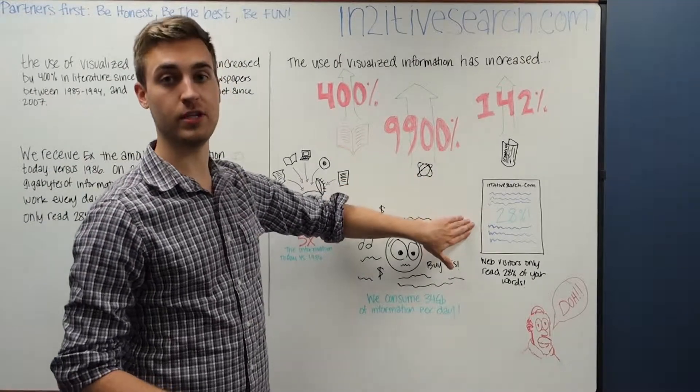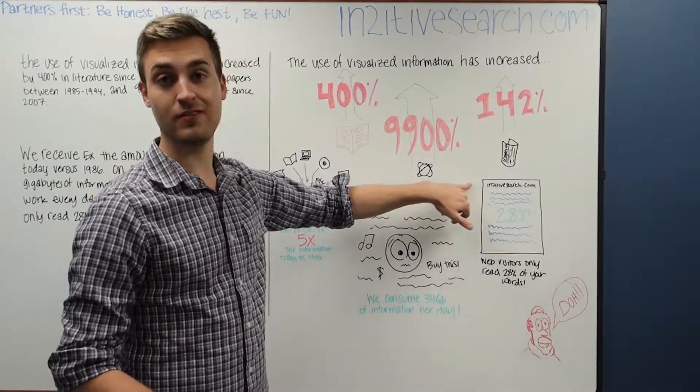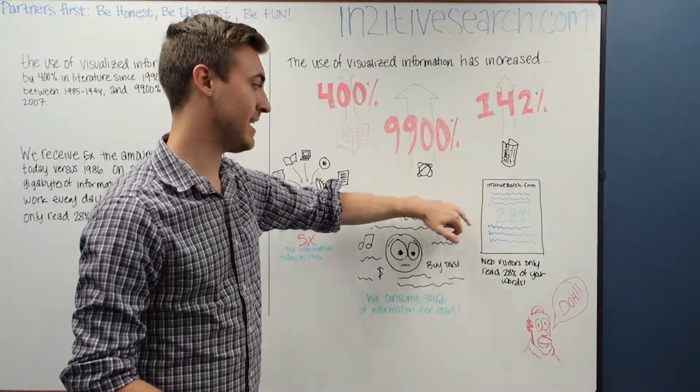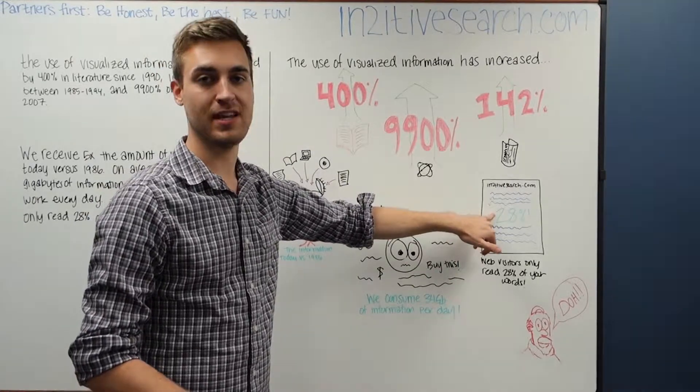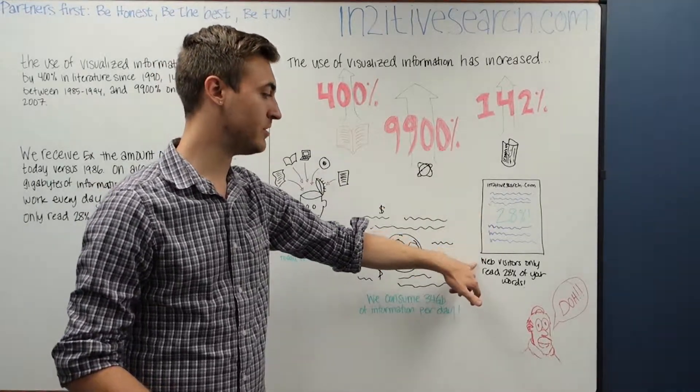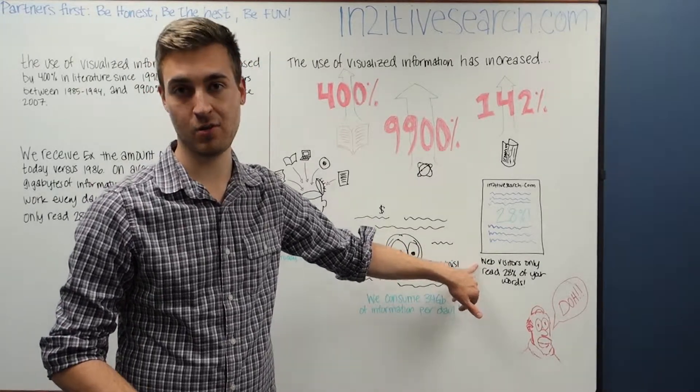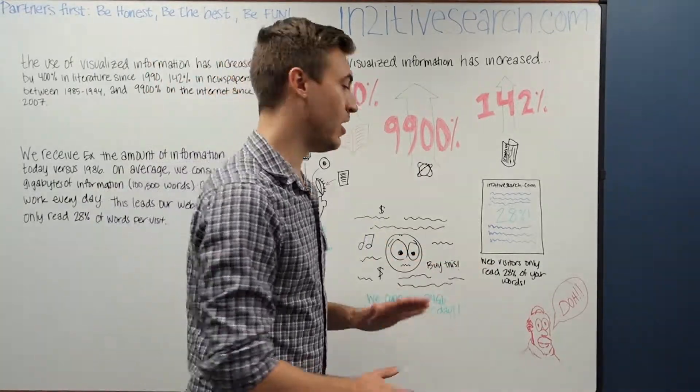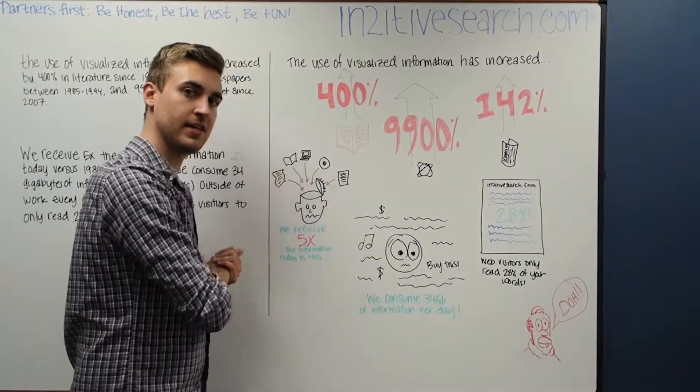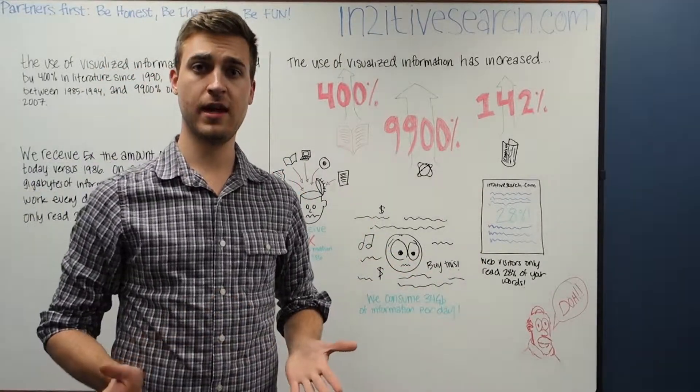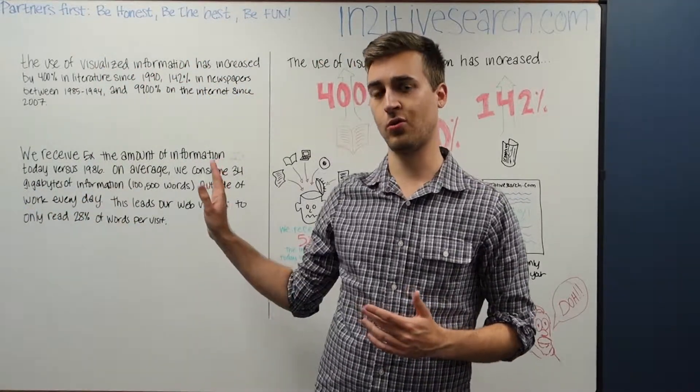Then over here, I have a crudely drawn web page, intuitive search.com to be exact, and a 28% in the middle. So then here we have underneath web visitors only read 28% of the words on your webpage. So I hope that this data visualized section is a little bit easier for you guys to consume versus the whole text thing.